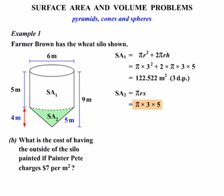So working this out, pi times 3 times 5, we get 47.124 m².